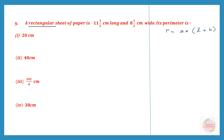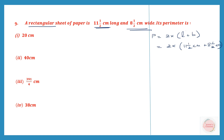Here it's a rectangular sheet of paper. To find the perimeter, we multiply 2 into length plus breadth. The length is 11½ cm and the breadth is 8½ cm. We convert 11½ — a mixed number — into an improper fraction: 2 elevens are 22, plus 1 is 23, so that's 23/2.